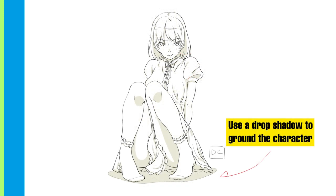A drop shadow is the easiest way to set your characters on the ground to make it look like they are actually contacting it. The opposite also works — by increasing the distance between the drop shadow and the character, you can make it look like they are floating or jumping.